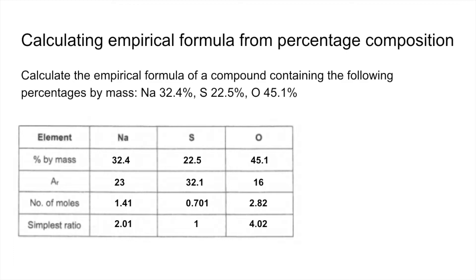Now, the 2.01 is so close to 2, we can just assume that is 2. Whereas in the previous one, it was 1.5. We couldn't round that up to 2. We had to multiply out. We don't need to multiply out in this one. So it's just Na2SO4.